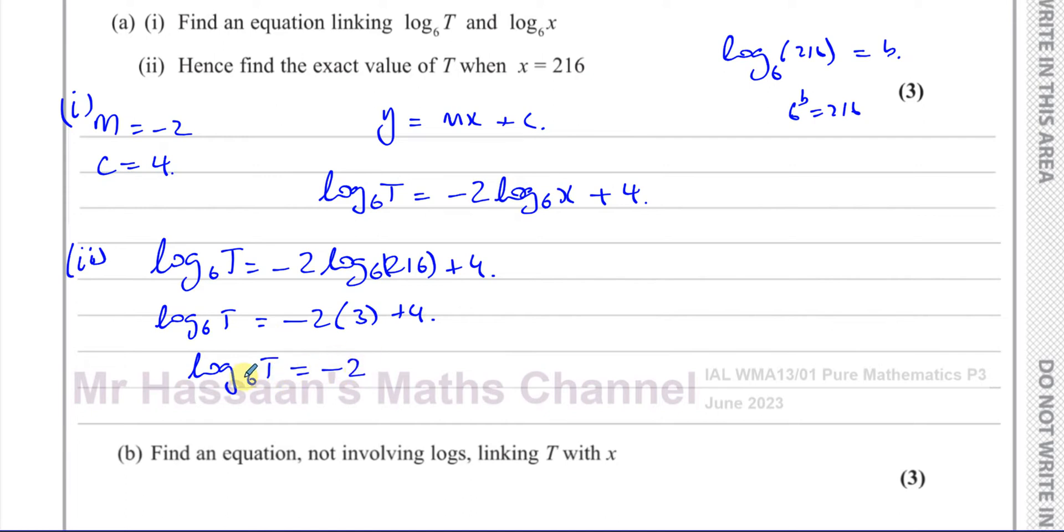And what does this mean? This is the base, this is the power, this is the result. We know that if we have something in index form, A to the power of B equals C, you can rewrite that in the form log to the base A, C equals B. This is the power, this is the base, this is the result. A to the power of B equals C. So 6 to the power of minus 2 equals T.